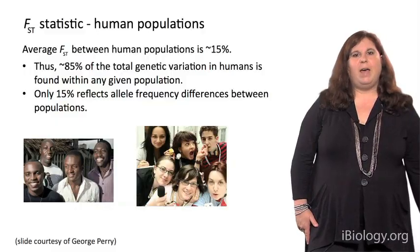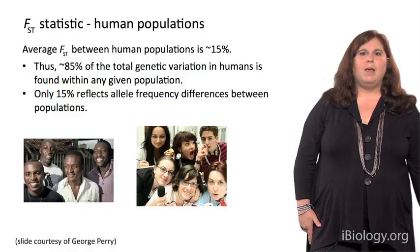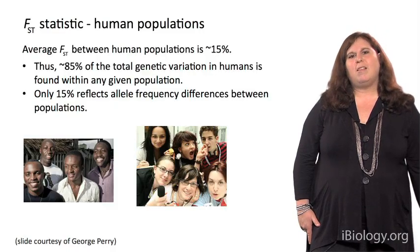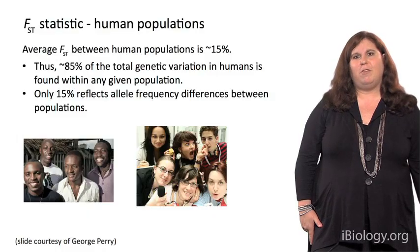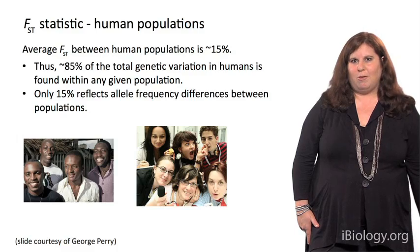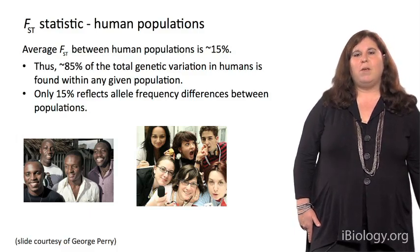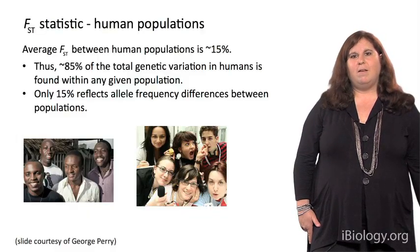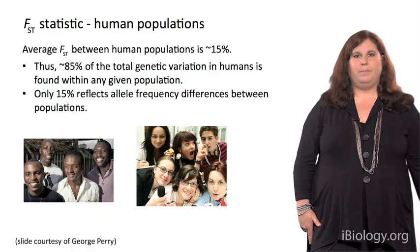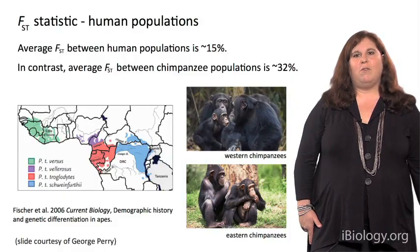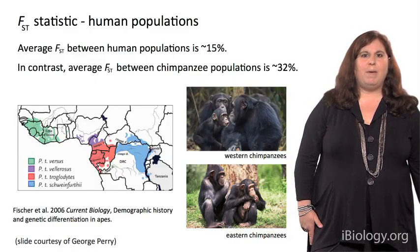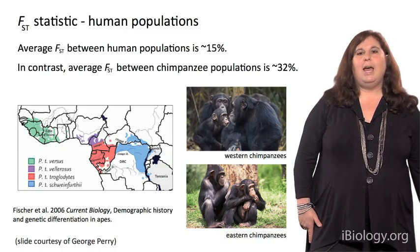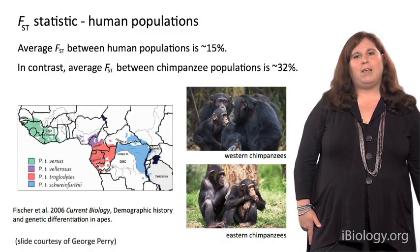So what do we see in humans? The average FST between human populations is about 15%, meaning the majority of genetic variation is found within a population, and only about 15% of genetic diversity differs between populations. This reflects our recent common ancestry in Africa within the past 50,000 to 100,000 years. Interestingly, if we do this calculation for chimpanzee populations, the value is around 32% — so there's actually a lot more differentiation among chimpanzee populations than among human populations, reflecting our overall close genetic similarity to each other.